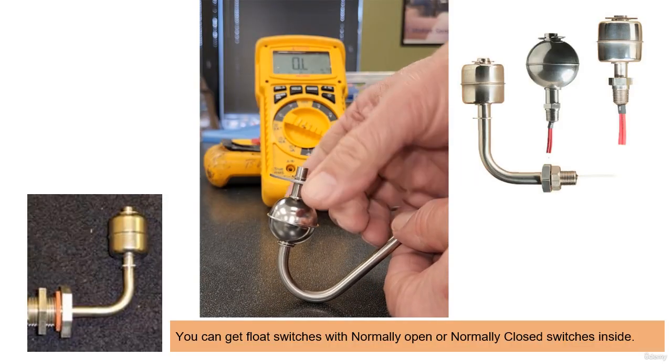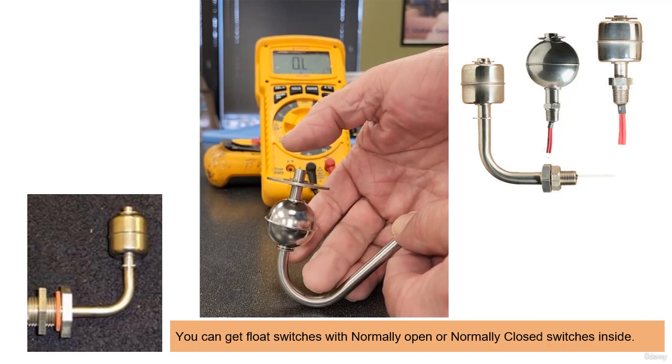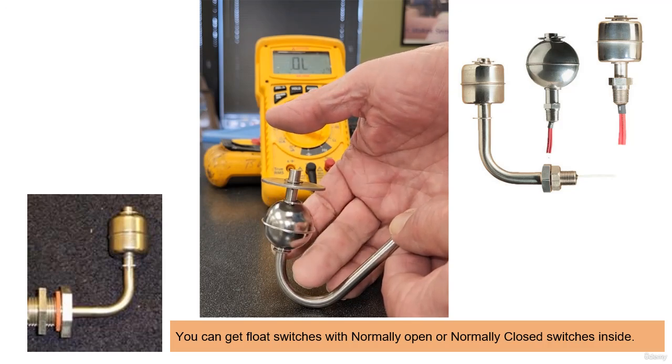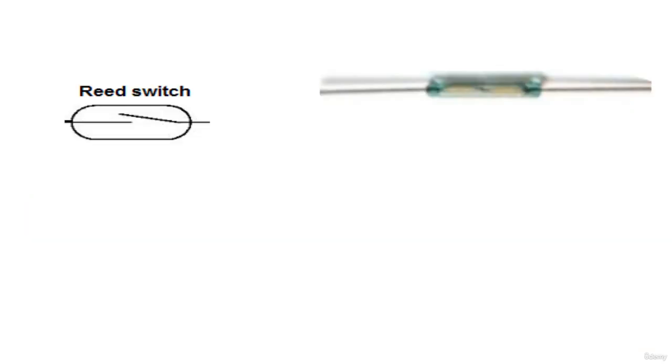Float switches are also a magnetic reed switch. The ball or float contains the magnet and the stem has the switch built in. It is important to make sure you don't reverse the mounting of the float ball as this will likely change how the switch works. Typically, when working with reed switches, they are normally open. When you put the magnet near them, they close.